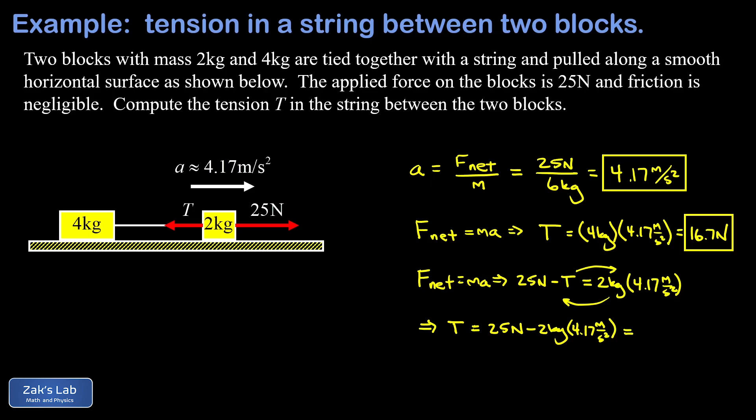Now taking 25 minus 2 times 4.17, we arrive at the same tension, 16.7 newtons.